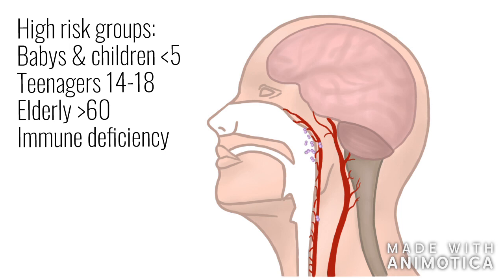Teenagers between the age of 14 and 18 because they show more behavior which enhances the chance at obtaining the bacteria, such as kissing multiple people. Besides that, the elderly older than 60 years old because the immune system weakens with age. And people of all ages with an immune deficiency.